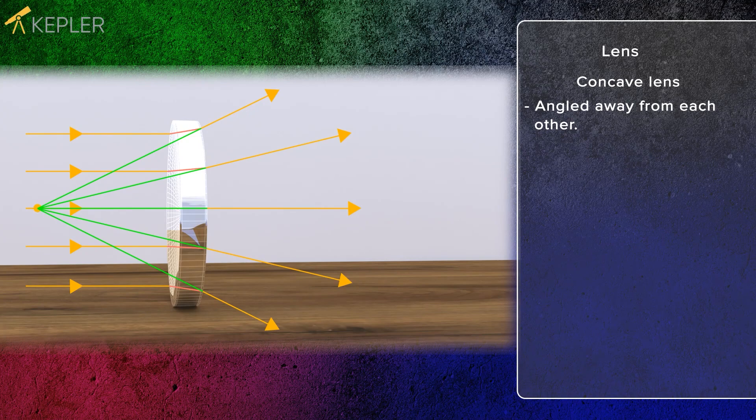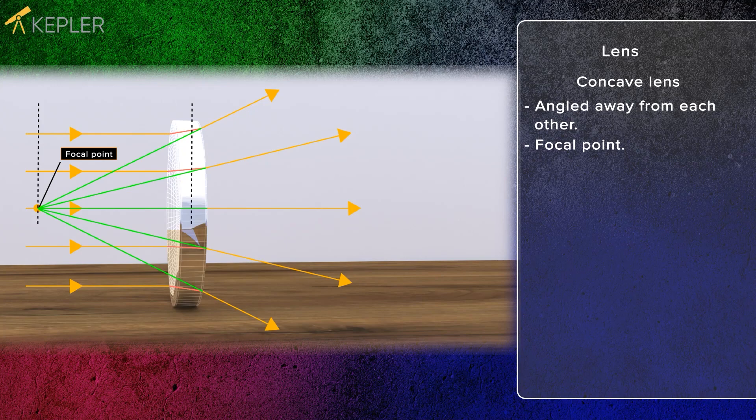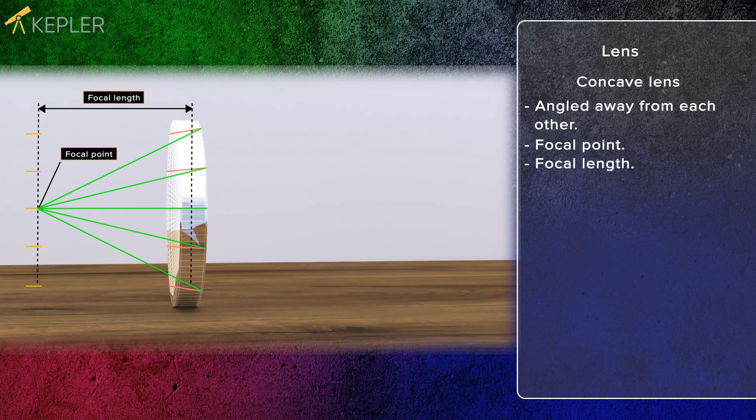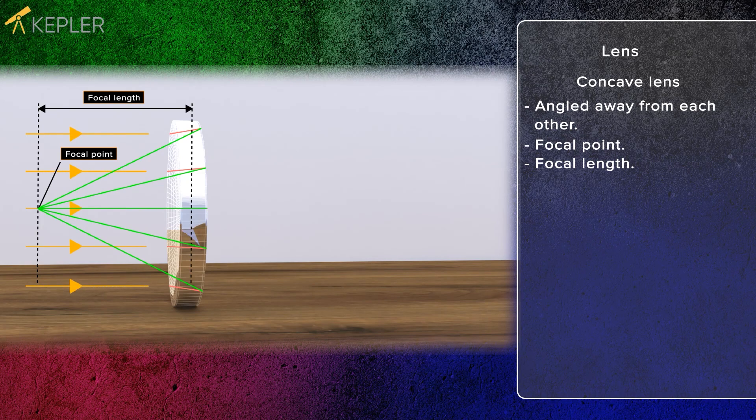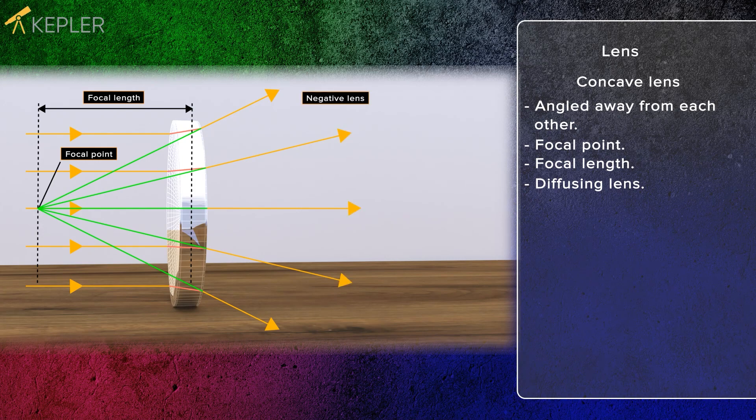Where they cross is called the focal point. The distance from the lens to where the light beams cross is called the focal length. A concave lens is called a diffusing lens because it diffuses the light rays after they hit the lens. This is a negative lens.